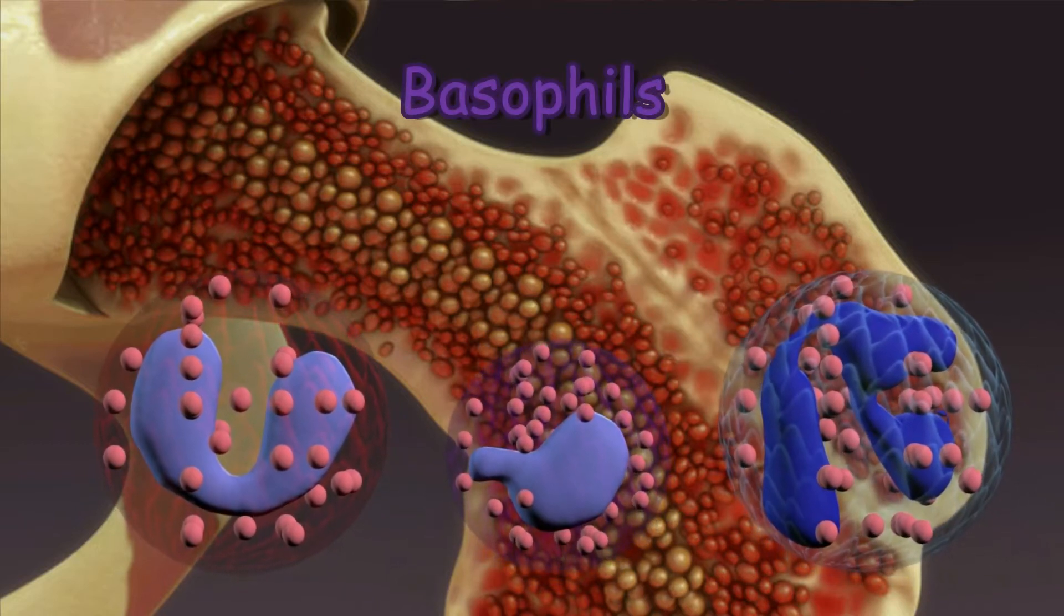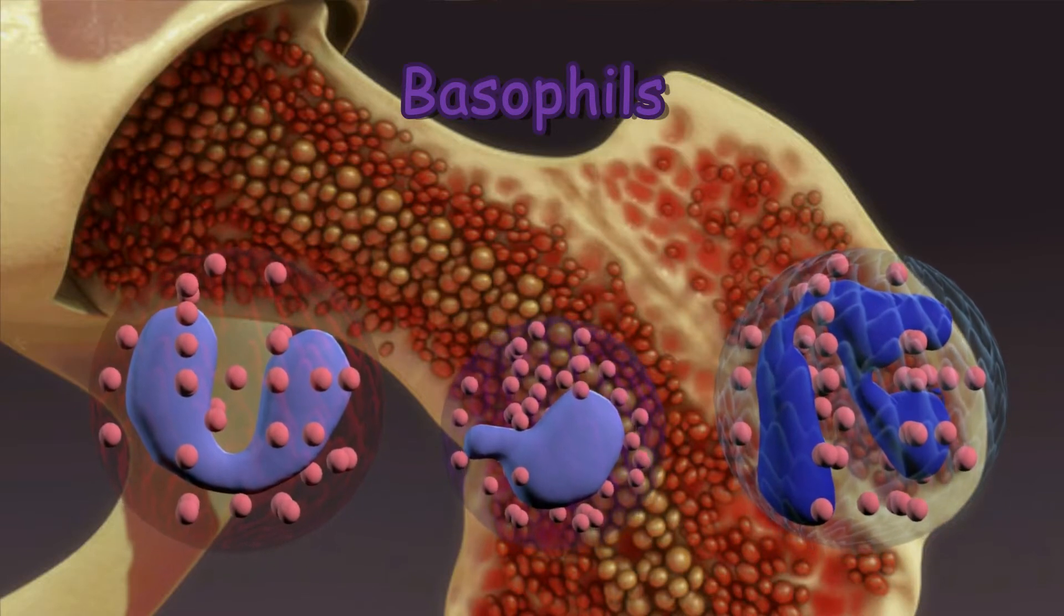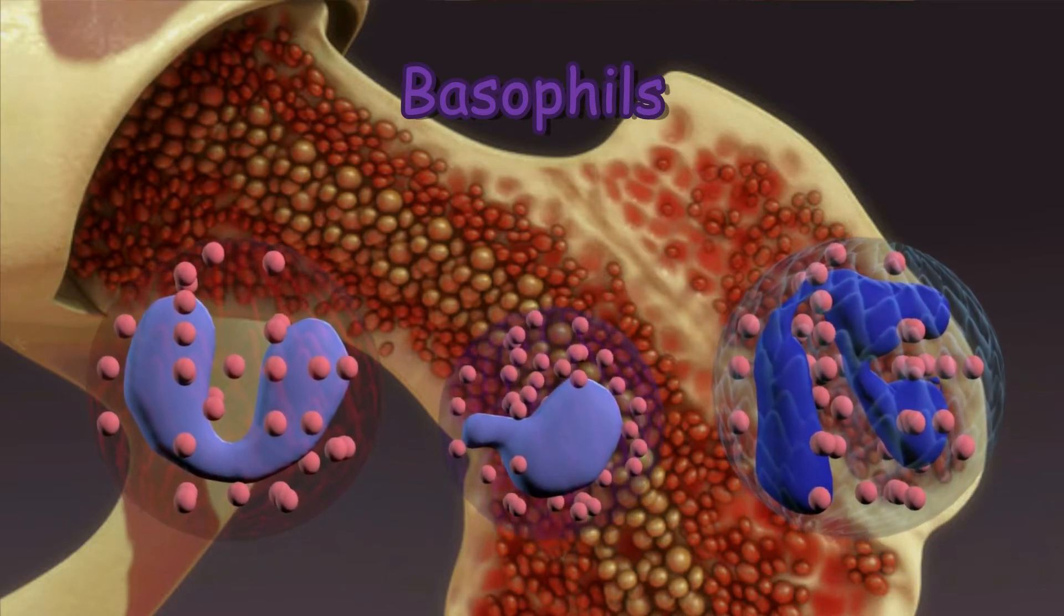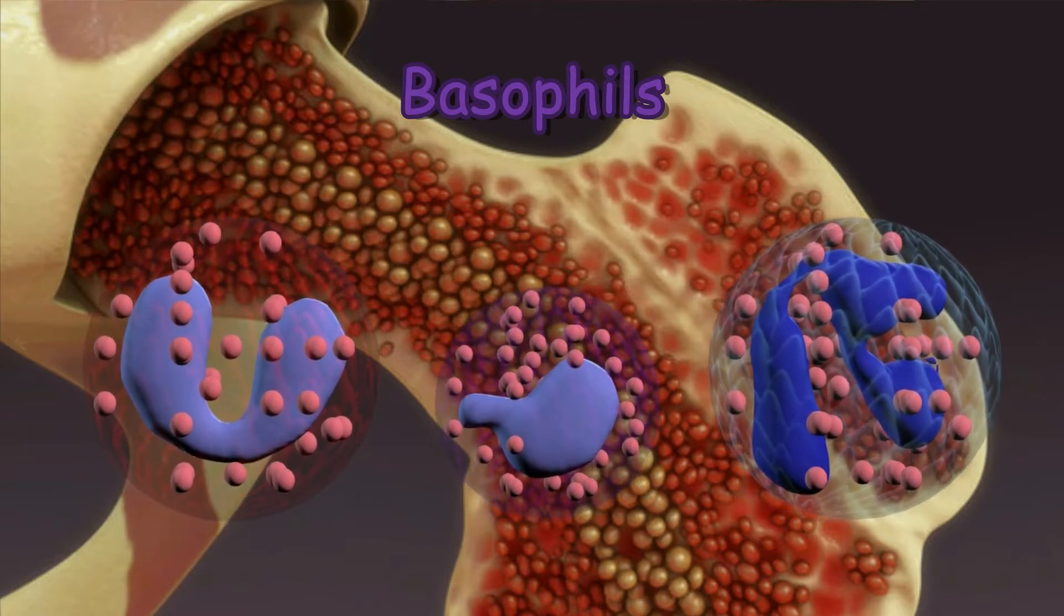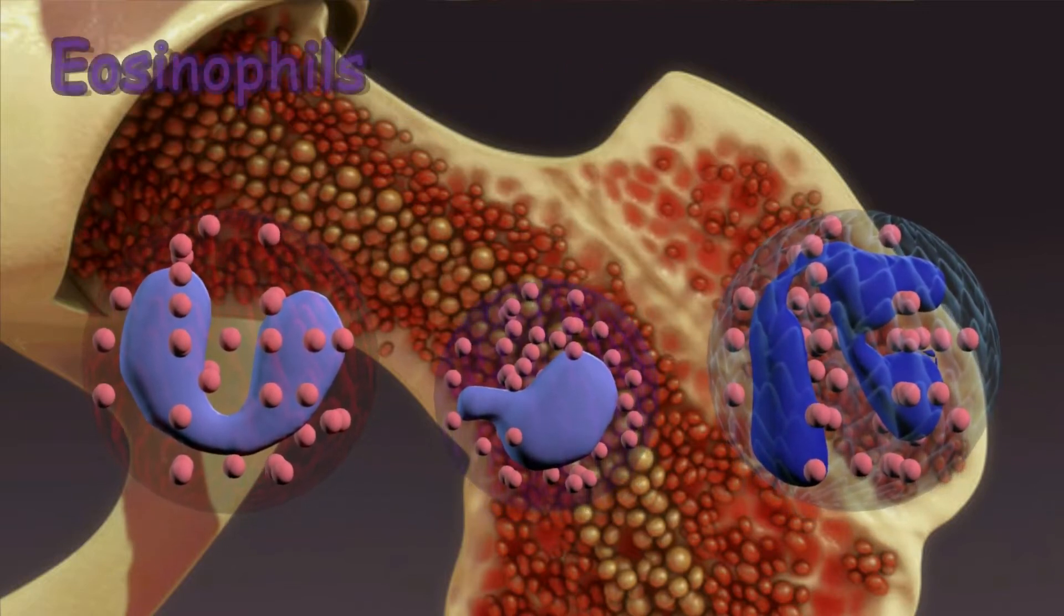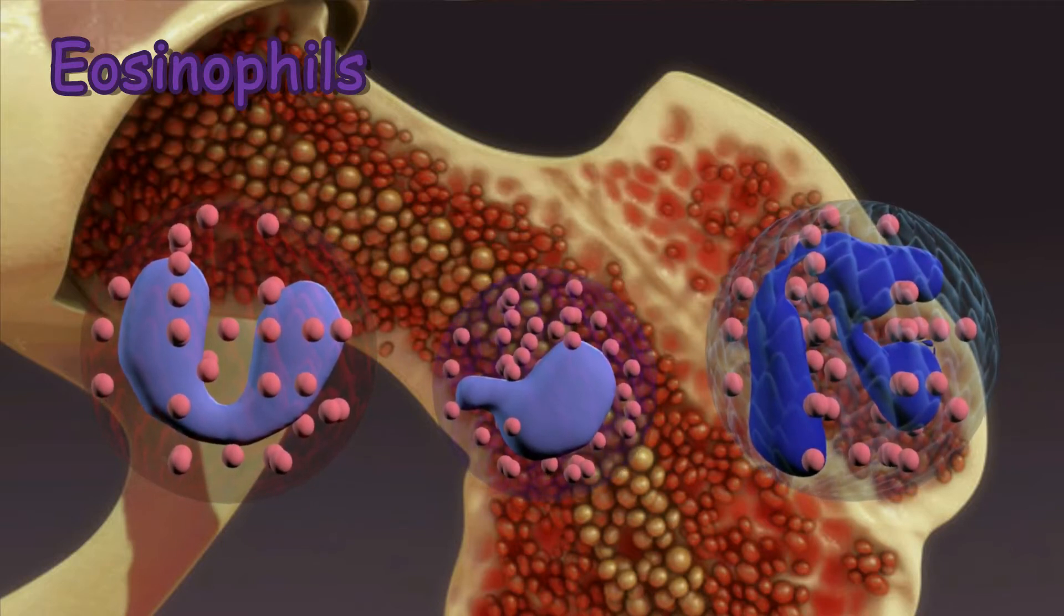Basophils are small cells that seem to sound an alarm when infectious agents invade your blood. They secrete chemicals such as histamine, a marker of allergic disease that helps control the body's immune response. Eosinophils attack and kill parasites and cancer cells and help with allergic responses.